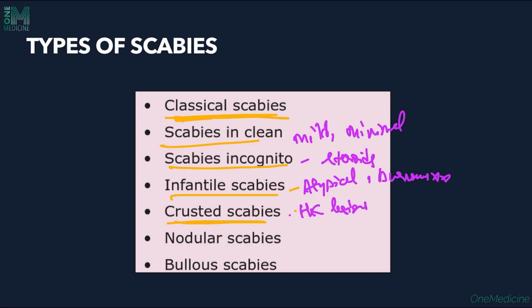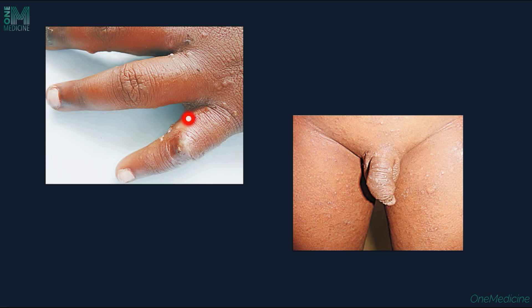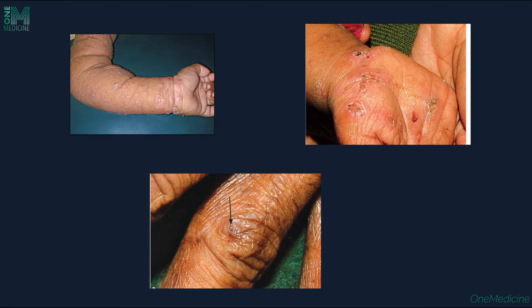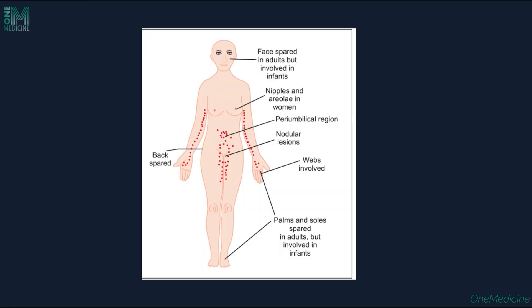There is also a nodular variety with nodular lesions and a bullous variety with bullous lesions. The burrows, multiple papules, and pustules can be seen on the genitalia, on the flexors in infants, and on the palms and fingers. The usual sites of affection are the flexors, the wrist, the palms, the umbilical area, and the genitalia — this distribution is called the Hebra circle. The face is spared in adults but affected in infants, and nipples should be examined in women.